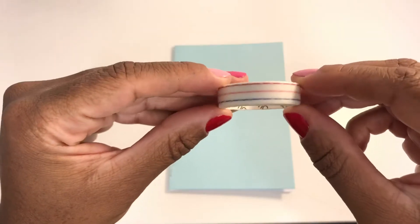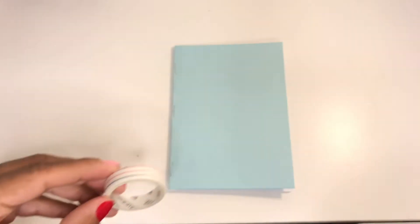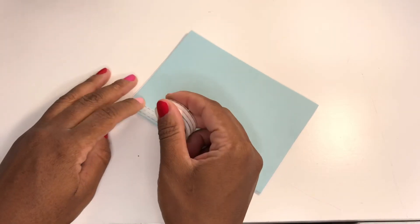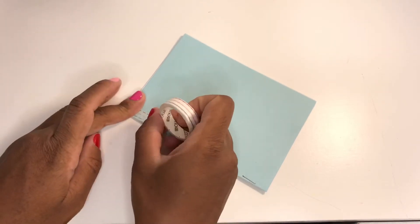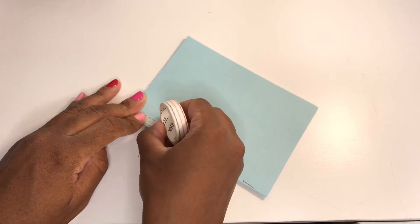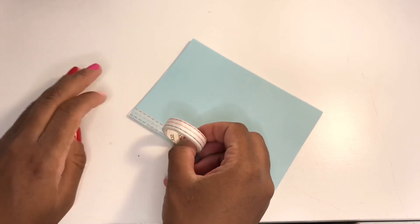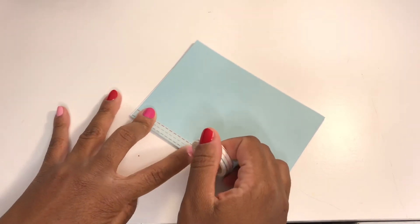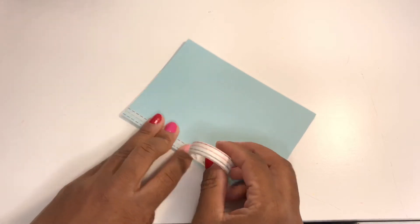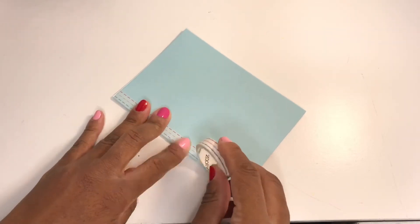I decided to take some washi tape—I will link it down below—and I'm just taking a quick strip of that and I'm using it to cover the staple bindings, just so we have a more aesthetically pleasing journal. You can skip this step if you don't want to, or you can add whatever you want to cover those staples.